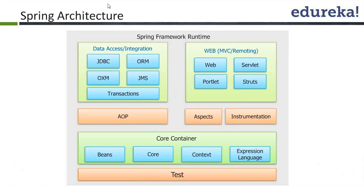A student asks: is JPA also part of ORM? Yes, that is correct. JPA stands for Java Persistence API. When we talk about persistence, it is part of data access. ORM internally uses JPA for persistence.